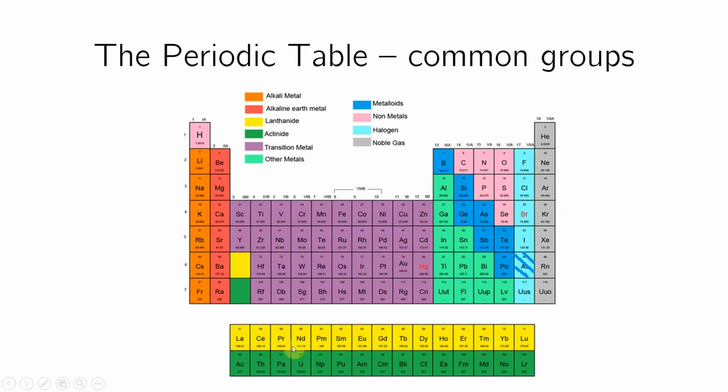These rows are known as, this is the lanthanum. So lanthanides. And the actinum is actinide. So those are the lanthanides and the actinides. In this island off the periodic table. That we will rarely, if ever, use these elements.